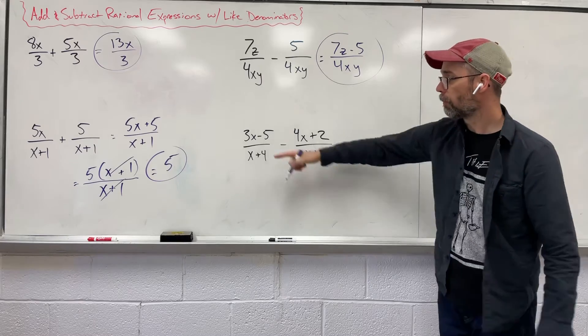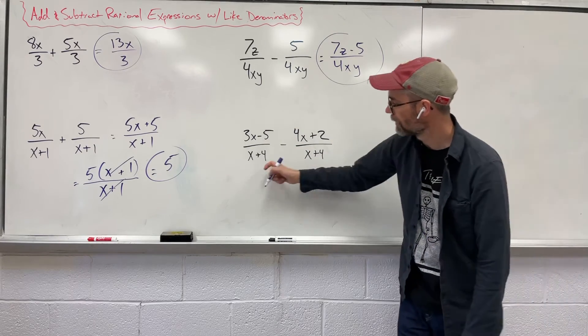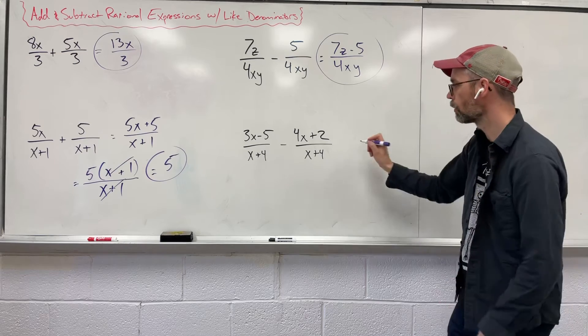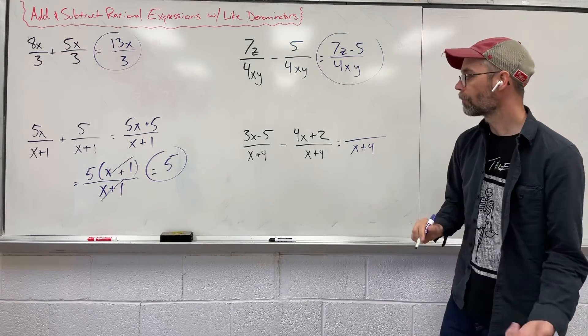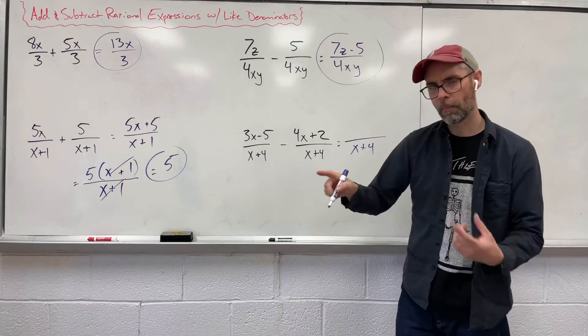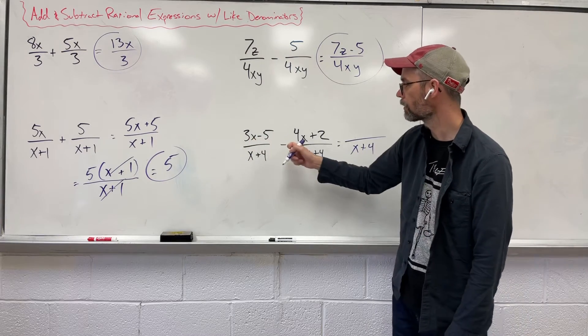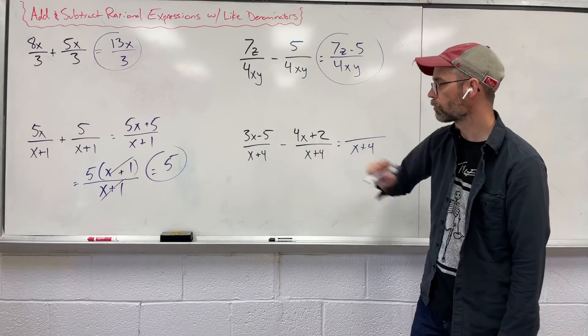Last one. So we have binomials up top, bottom, top, bottom. Our denominators are the same. Good. We want to keep them. So we keep that x plus 4. Up top, now we're going to have to combine individual pieces.